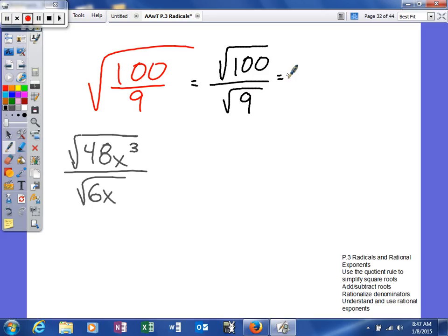Well, the square root of 100 is 10, and the square root of 9 is 3. So 10 thirds would be our answer for that one.